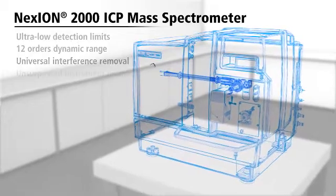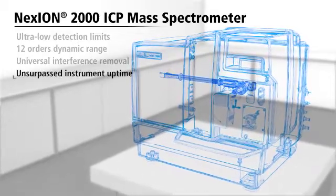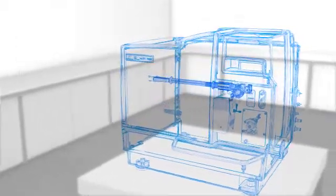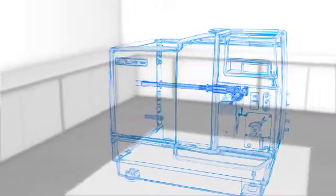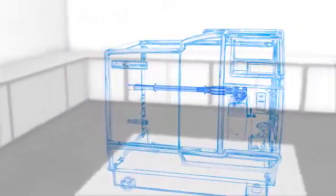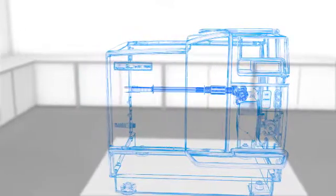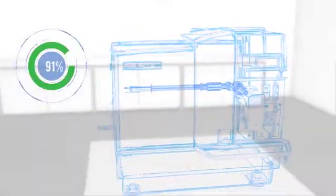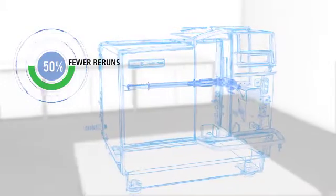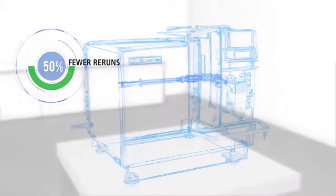It provides the most direct path to reproducible and accurate results. That path is further aided by the instrument's versatile dilution capabilities and its ability to selectively reduce the signal for any element of interest, thereby improving productivity and leading to up to 50% fewer reruns.